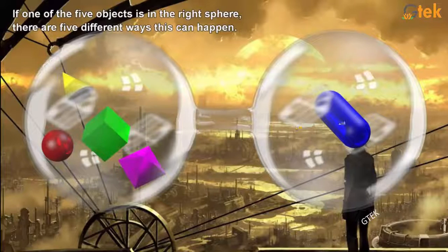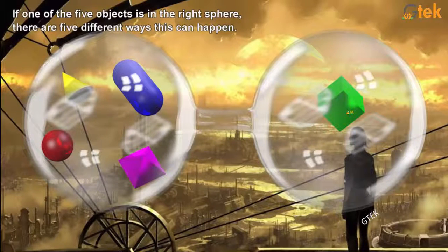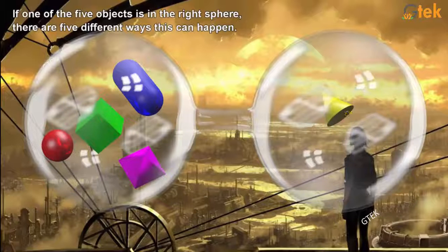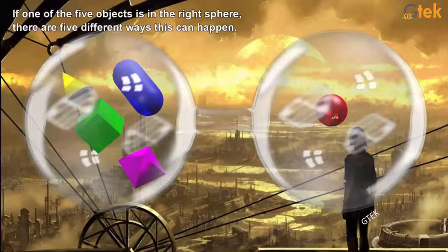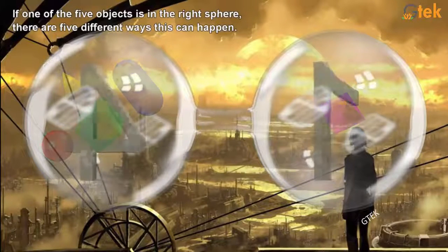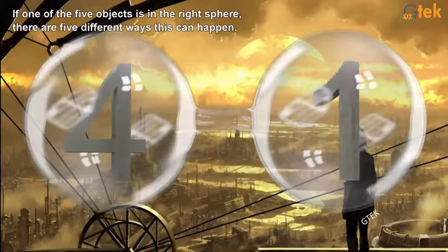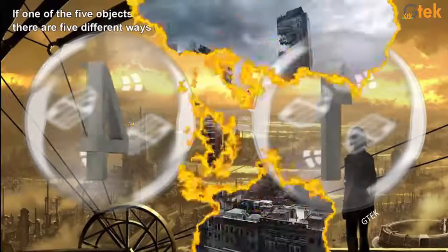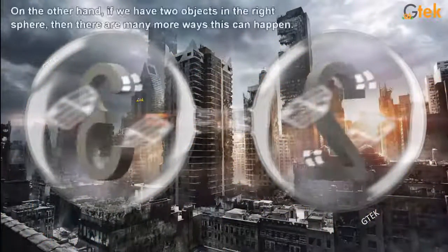If one of the five objects is in the right sphere, there are five different ways. It can be blue, it can be green, it can be yellow, it can be red, it can be purple or violet. So five combinations can be done.